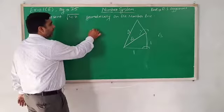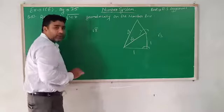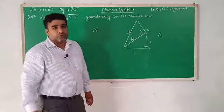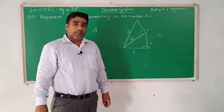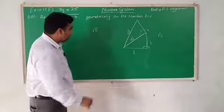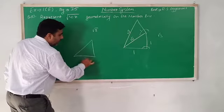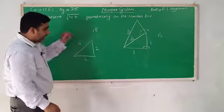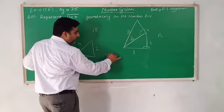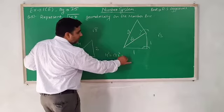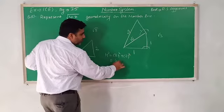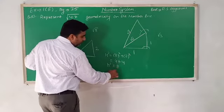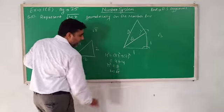Now suppose I want to make root 8. I can make the base and perpendicular both equal to 2. So hypotenuse squared equals 2 squared plus 2 squared, which equals 8. Therefore the hypotenuse will be root 8. Is that clear?